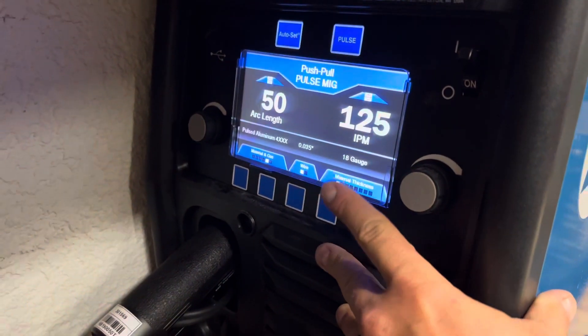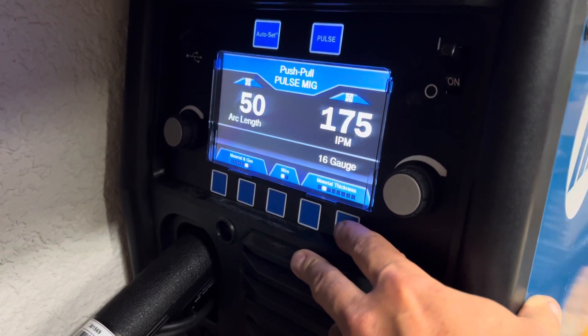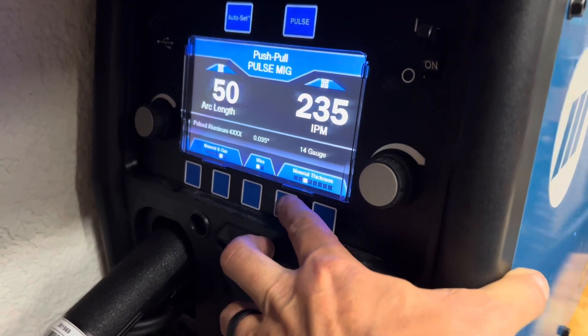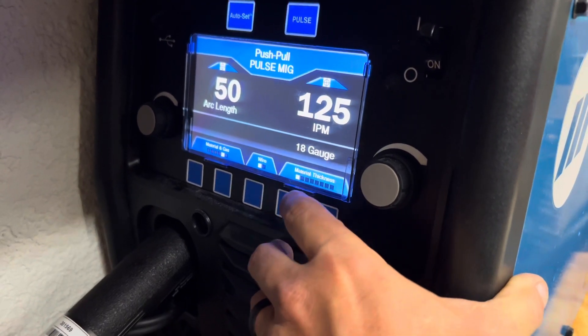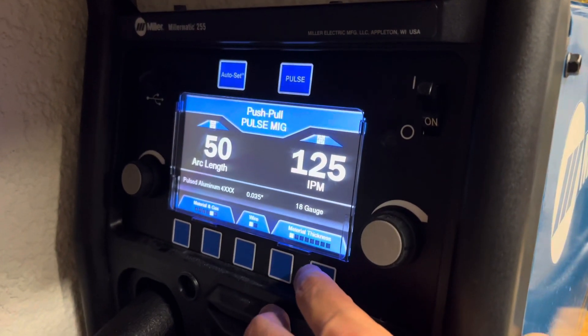And you can just decide here, if you go into the auto set or the pull side, how thick of aluminum you want. And it just changes your wire speed is all it's doing. So if you just put it over to manual mode and you look at the side panel for how thick a material you're welding, you can just adjust it. But this is just kind of easy.